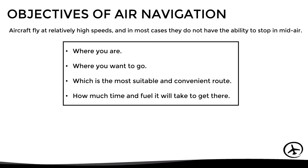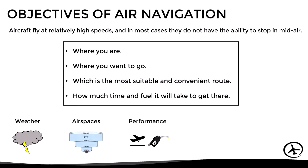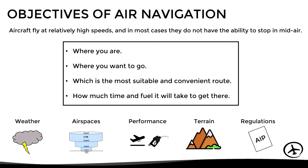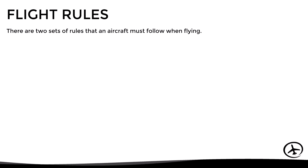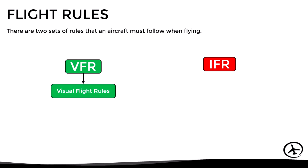In order to answer these questions, it is necessary to take into account factors such as weather, airspace structure, aircraft performance, terrain and obstacles, and all applicable rules and regulations. In relation to these regulations, there are two types of flight rules: the Visual Flight Rules or VFR, and the Instrument Flight Rules or IFR. When flying under VFR, the pilot has to navigate using visual references, which implies that visibility must be good. On the other hand, when flying under IFR, the pilot shall navigate by reference to the instruments in the cockpit, which means that the aircraft can operate in low visibility conditions.